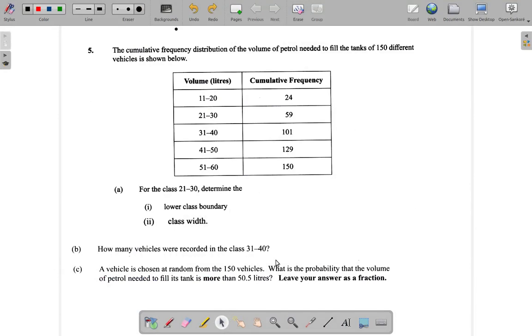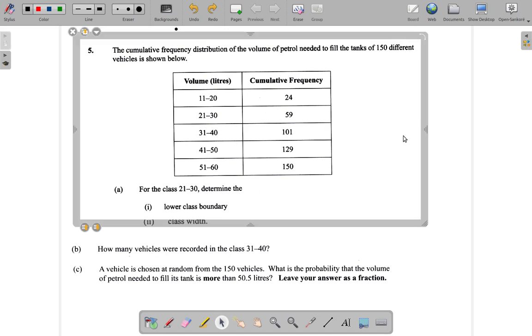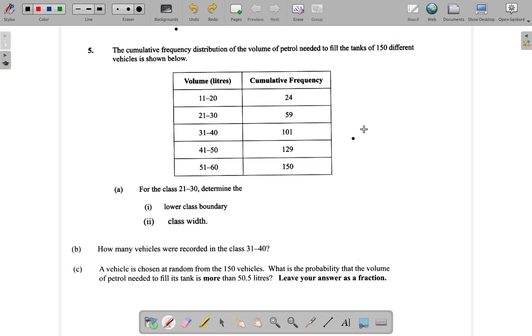Question 5B asks how many vehicles were recorded in the class 31 to 40. So that is this class here. Let me get this right. The 31 to 40 class is this class. Now you see...